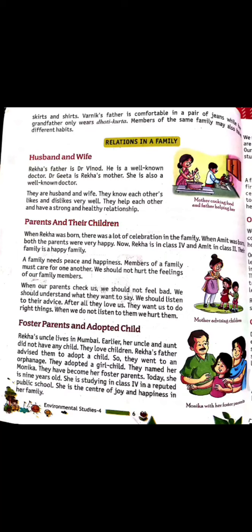Foster parents kya hota hai? Foster parents hota hai ki jab koi log kisi baby ko adopt karte hai, orphanage se lekar aate hai. Orphanage kya hota hai? Orphanage wahan per anath bachche rehte hai, jinki koi parents ya family members nahi hoti. Woh orphanage hota hai. Agar orphanage se woh lekar aate hai, toh woh uske foster parents ho jaate hai. Jo parents babies ko adopt karte hai, they are called foster parents. Aur jo baby adopt ki jaati hai, woh hoti hai adopted child.